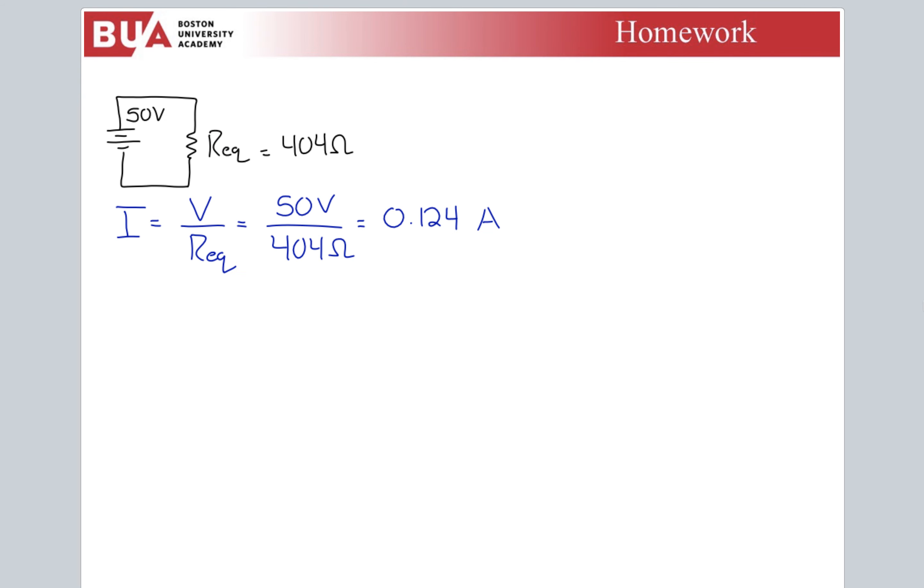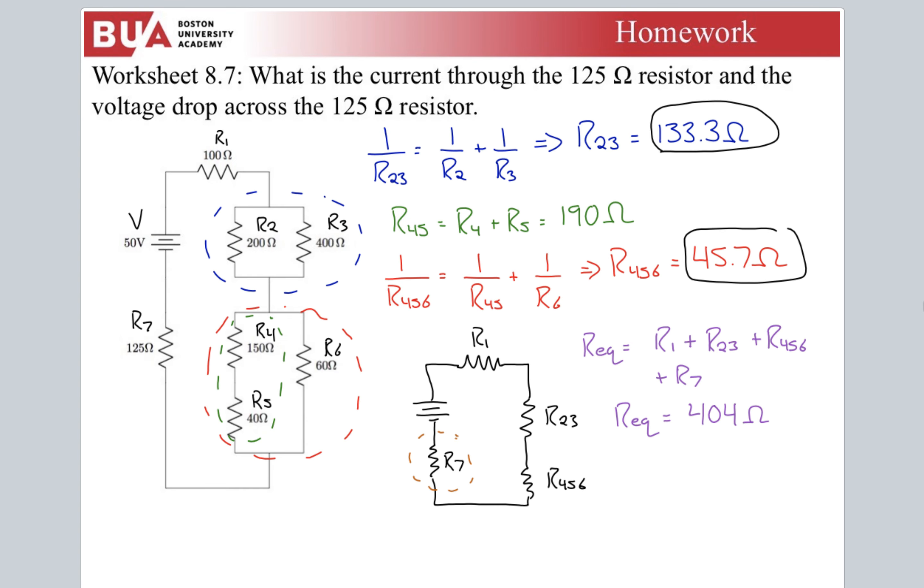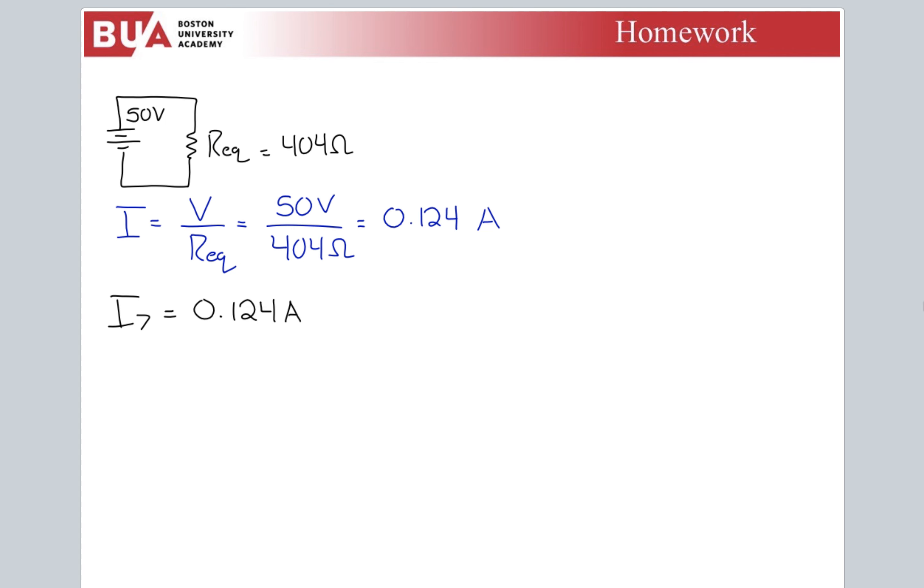Right away, we can jump to I for R7 is 0.124 amps. Look back at our original circuit. The current leaves the battery, hits a resistor, splits, recombines, splits again, but then it recombines. The current coming out of the battery and the current going back into the battery is the total current. Those splits we don't know, but we don't care because we're after R7.